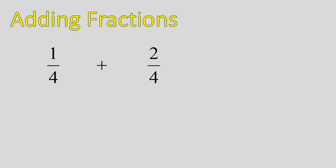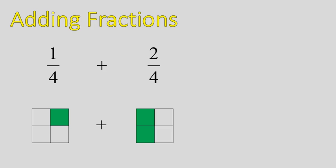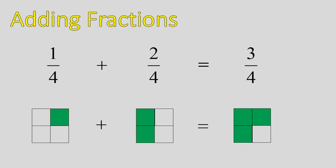So let's look at adding fractions. What does 1 over 4 plus 2 over 4 actually mean? Here's a bit of a visual display. I've shaded in one part out of 4, and I'm adding that to two parts out of 4, and that gives me three parts out of 4. When you're adding a fraction, basically you're adding the numerator — the number on top. The denominator remains the same, as you can see in this demonstration.